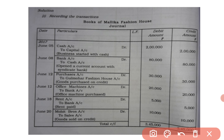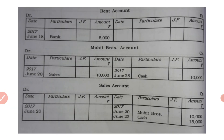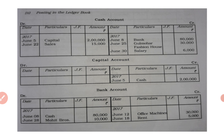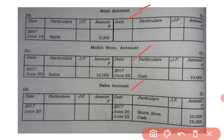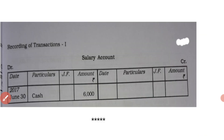With the help of journal entries, you can make the ledger postings very easily. This is one example we have studied today. You have to solve other examples to make it easy to understand and prepare ledger postings. In the next class, we will continue with the next topic. The total ledger accounts prepared here are: cash account, capital account, bank account, purchase account, Golmohar Fashion House account, office machines account, rent account, Mohit Brothers account, sales account, and salary account. Thank you.